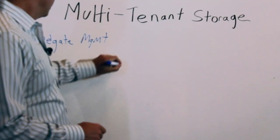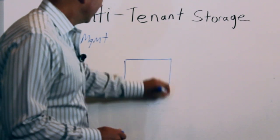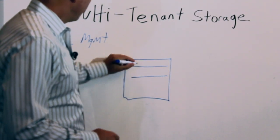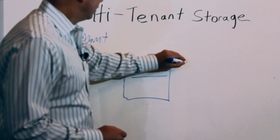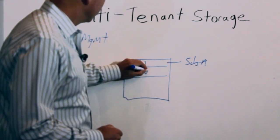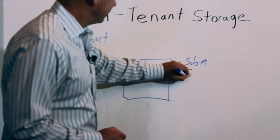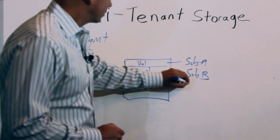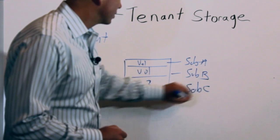An example might be, in a legacy storage system, we'd have a storage system and we might carve out Volume 1 and assign that to subscriber A. Then we might have Volume 2 and assign that to subscriber B and then Volume 3 and assign that to subscriber C.